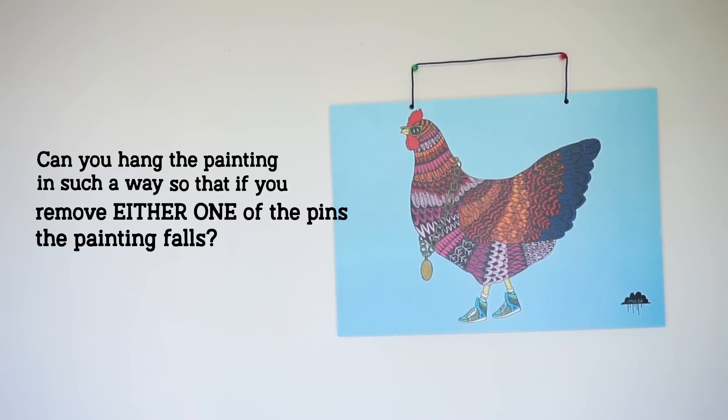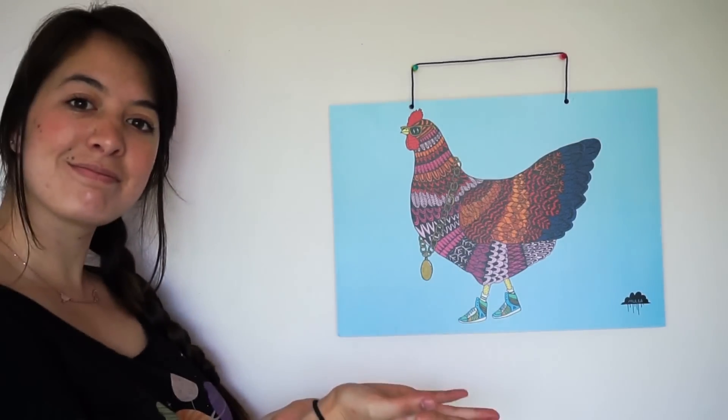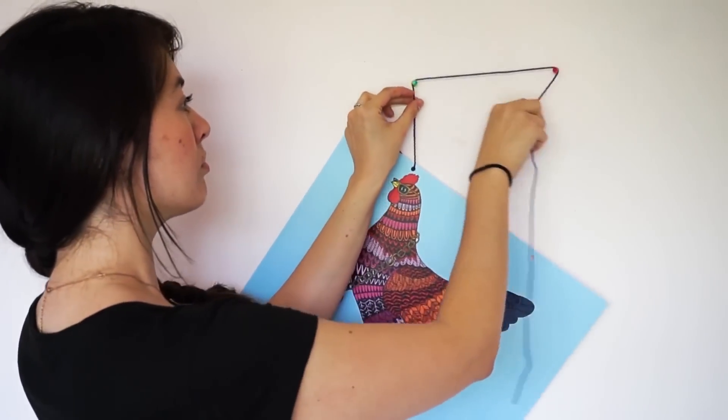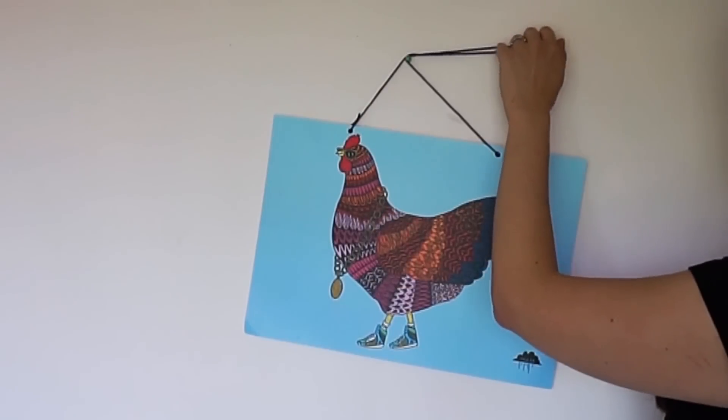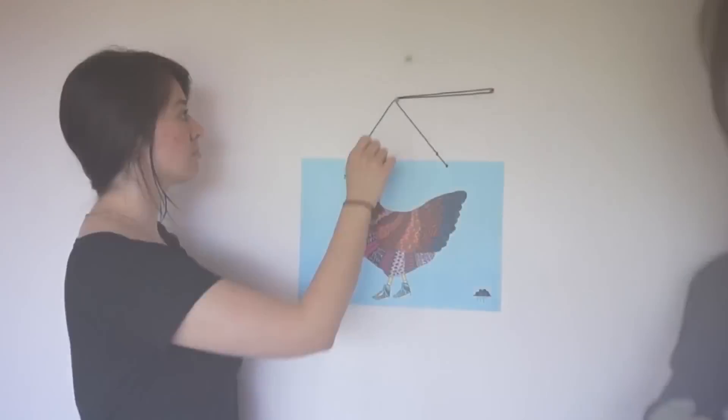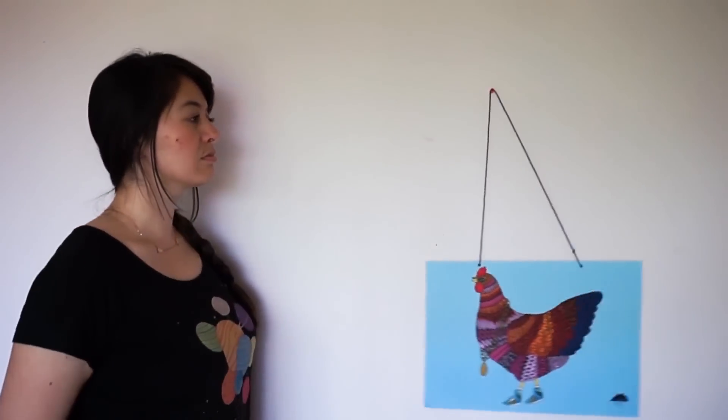The thing to focus on here is how to tie the string around the pins, not any of the physics of the objects. If you tie the string in the normal way one would hang a painting, this obviously won't work. It's pretty easy to think of ways to make it fall when one pin is removed, but the challenge is to make it fall if either one is removed.